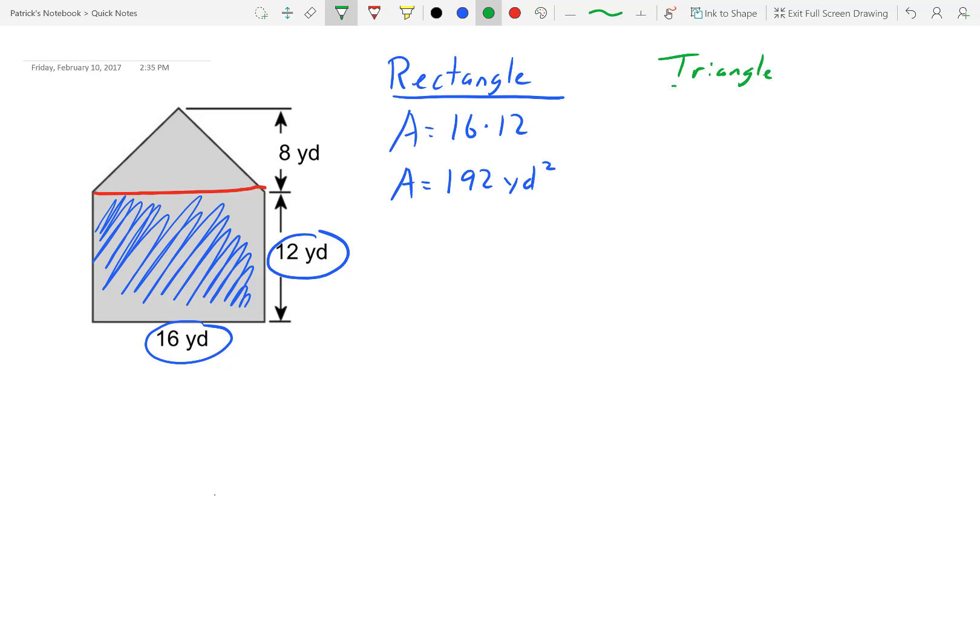So now I'm going to move on to the triangle. Triangle is a little less easy because the area of a triangle is one half times the base times the height, but they don't tell us the base.